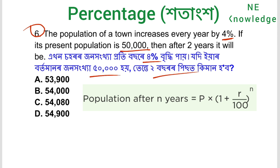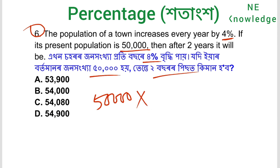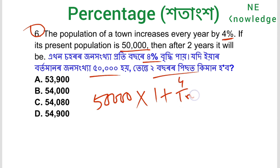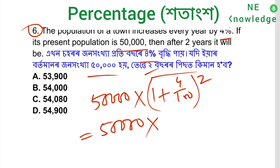The formula is P into 1 plus R by 100, raised to the power N, where N means the number of years — here, N equals 2 years. So we have 50,000 into 1 plus 4 by 100.